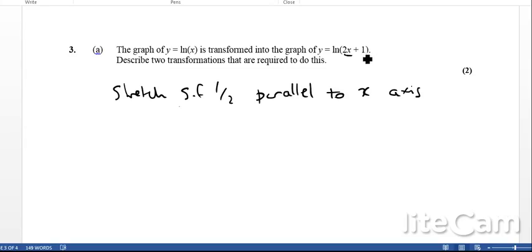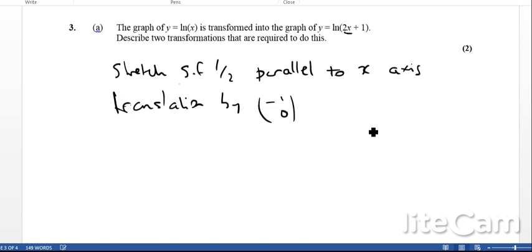And then once I've got the stretch parallel to the x-axis, well, the next thing here, if I add one here, it's the same as a translation by, in effect, translation of (-1, 0), so it translates, shifts the graph along by this factor here, (-1, 0). Okay, that's that question.